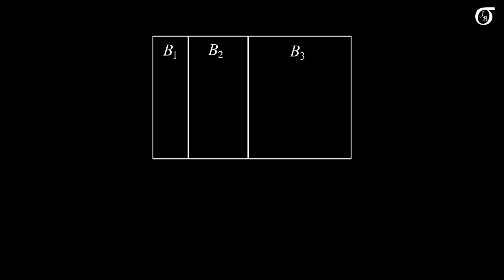Suppose we have a sample space S, and in that sample space we have three events, B1, B2, and B3, represented by these three regions. These three events are mutually exclusive and they are collectively exhaustive, meaning they take up the entire sample space. We sometimes say that the B's are a partition of the sample space.